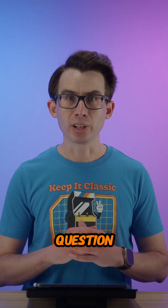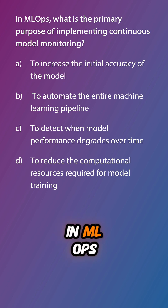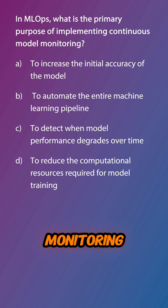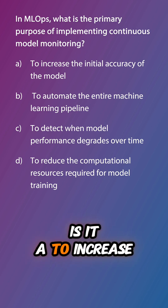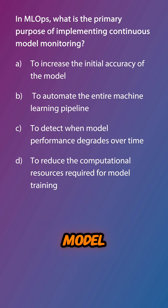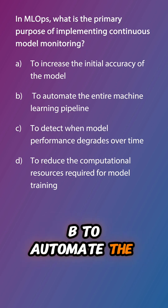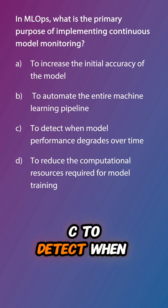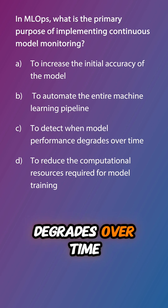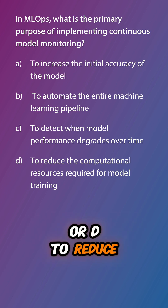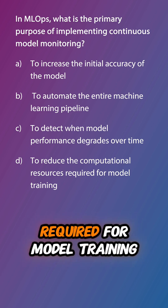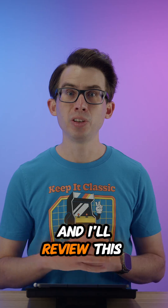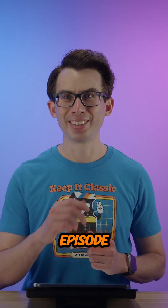So let's do a review question. In MLOps, what is the primary purpose of implementing continuous model monitoring? Is it A, to increase the initial accuracy of the model; B, to automate the entire machine learning pipeline; C, to detect when model performance degrades over time; or D, to reduce the computational resources required for model training? Post your answer in the comments and I'll review this question in our next episode. See you then.